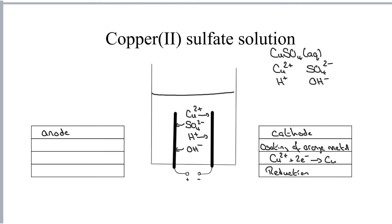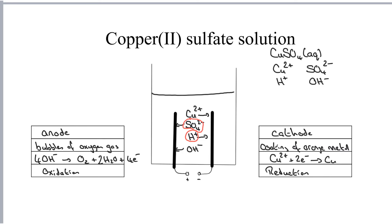At the anode, sulfate ions and hydroxide ions are attracted. Hydroxide ions lose their electrons and are therefore oxidized more easily than sulfate ions, so we get bubbles of oxygen gas. Our half equation: four OH- give O2 plus two H2O, losing four electrons — and that is oxidation. Now thinking about what's left in solution: the H+ ions and SO42- ions give us H2SO4. So we're going to get sulfuric acid in solution, and that solution would turn universal indicator or blue litmus paper red.